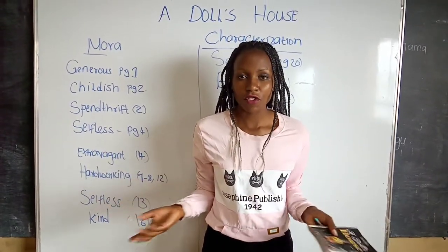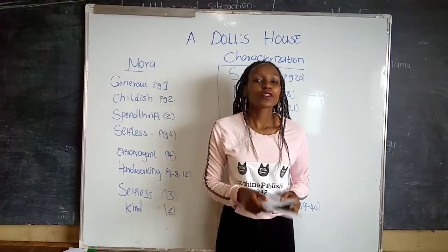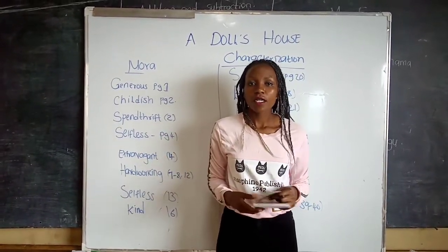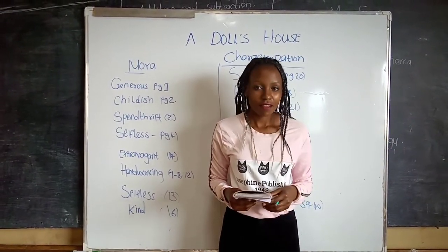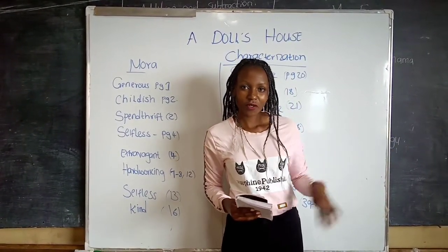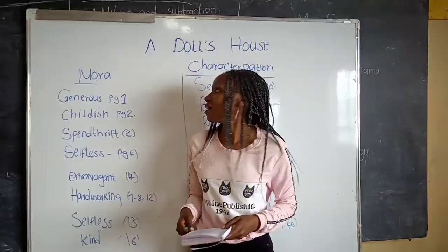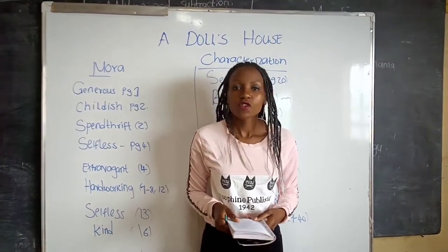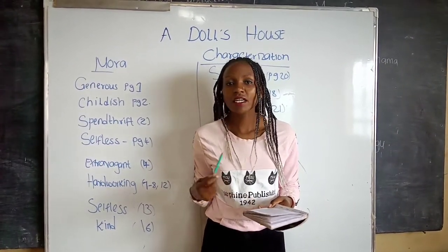By doing those three ways, you'll be able to give the characters in any story their traits. Now we are going to start with our first character and that is Nora. In the book, Nora is the wife of Torvald Helmer and the mother of three — that is Amy, Bob, and Ivar. She is the protagonist, or the main character, the good guy in our story. The first trait of Nora is that she is generous. On page one, Nora asks the porter to keep a coin: 'There is a shilling — no, keep the change.'